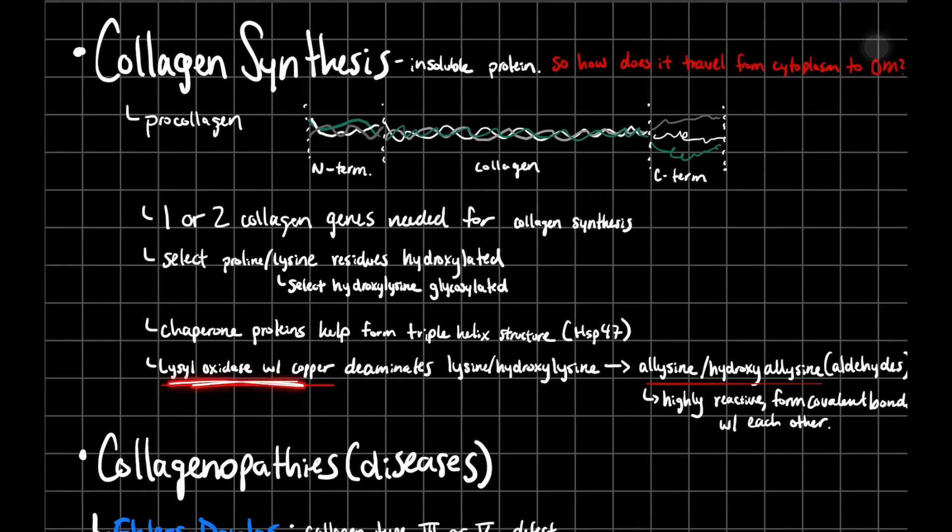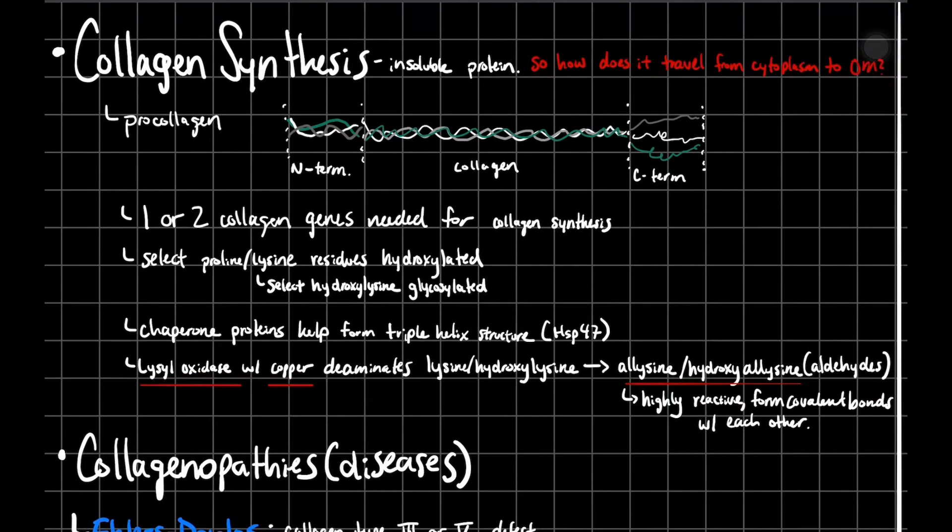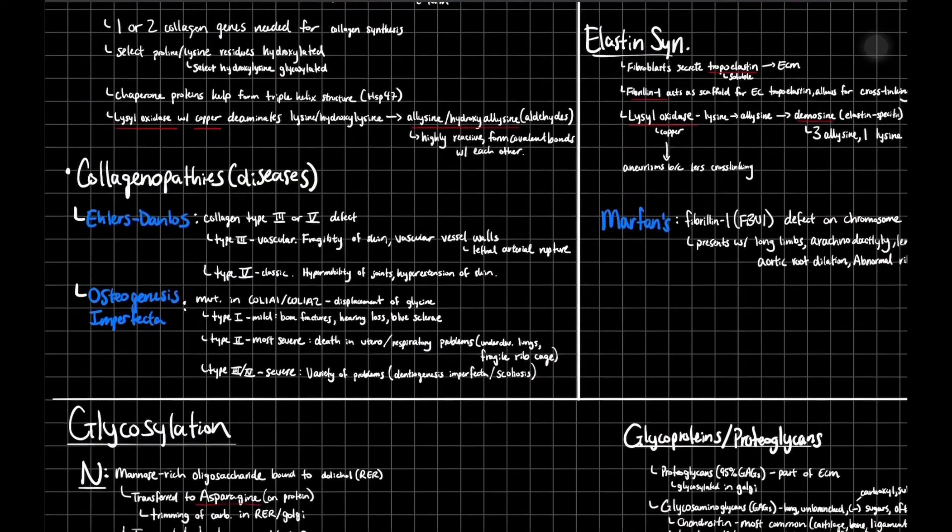Then you're going to have lysyl oxidase with copper. That's going to deaminate your lysine and your hydroxylysine residues. It's going to form allysine or hydroxyallysine, and these are going to be aldehydes. That's going to form the covalent bonds, and those covalent bonds are actually extremely important in keeping that collagen molecule together and functioning.